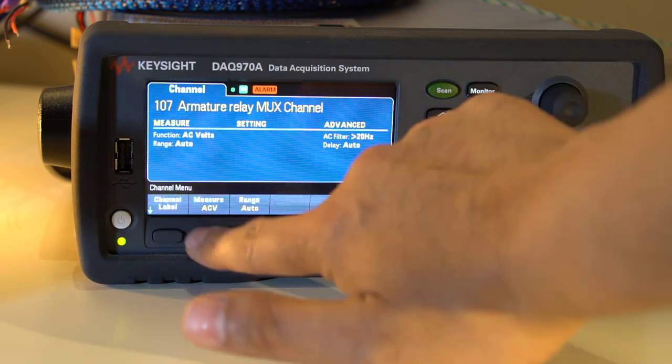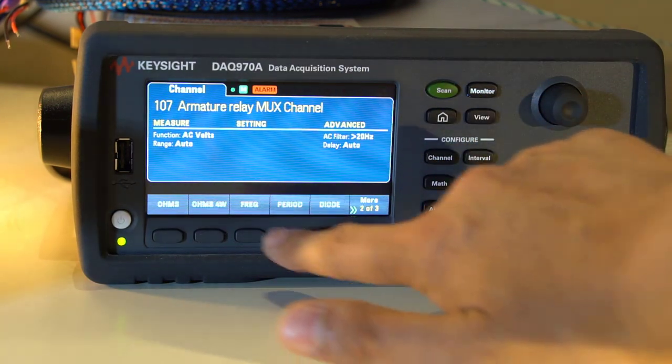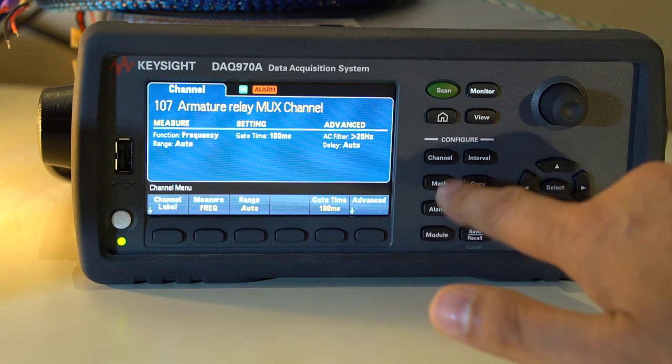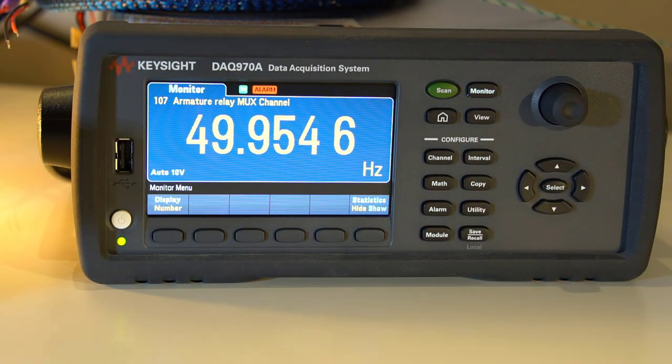It will also measure voltage, resistance including four wire for low ohms, current, capacitance and frequency up to 300 kilohertz.